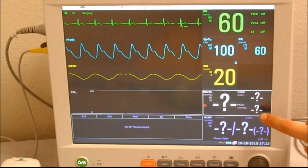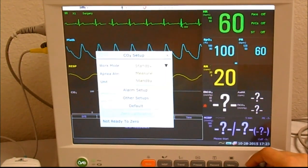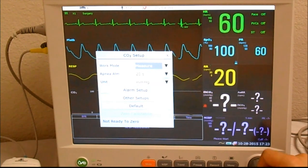In order to change that setting, simply tap on the end tidal CO2 measurement tile, and make sure the work mode is set to measure if you want to take readings. So we'll put it on measure at this time.